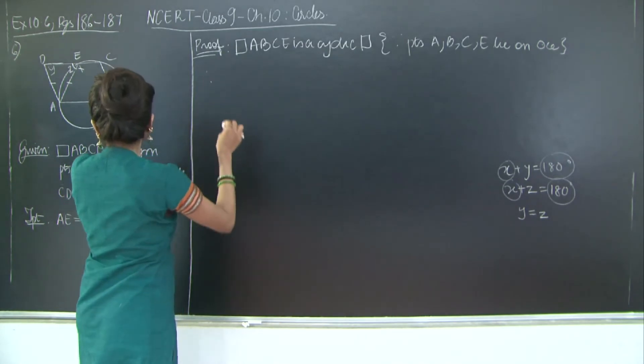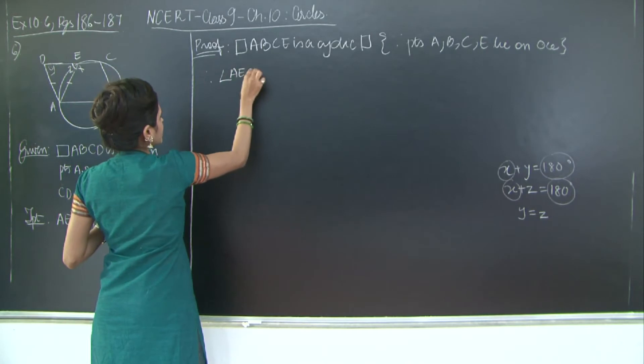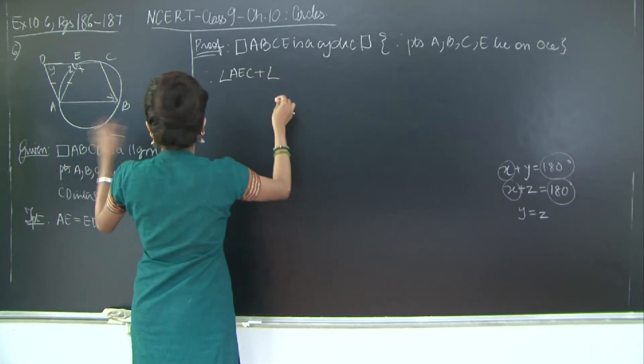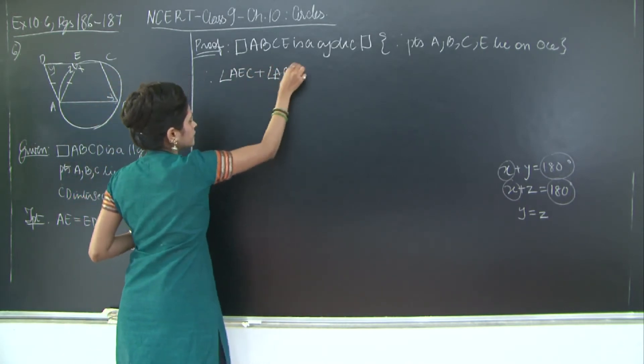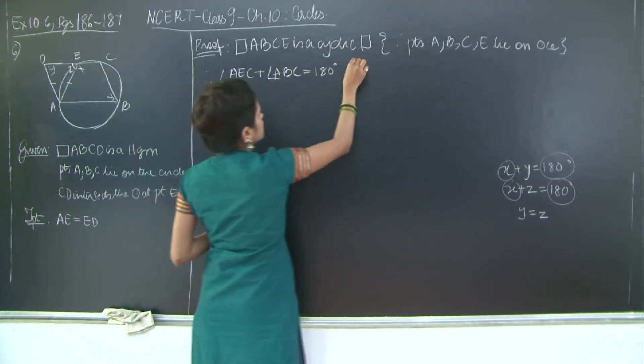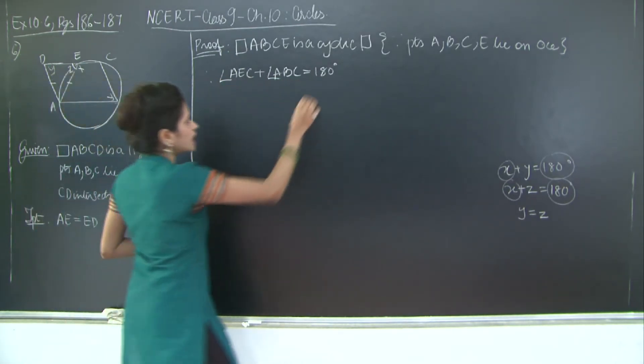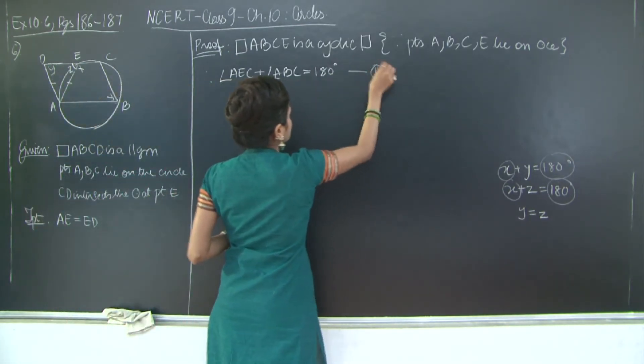Therefore which angle now? Angle AEC plus angle ABC is equal to 180 degrees. Why? Because cyclic quadrilateral. So you have therefore AEC plus ABC is equal to 180 degrees. Let's mark this as one.